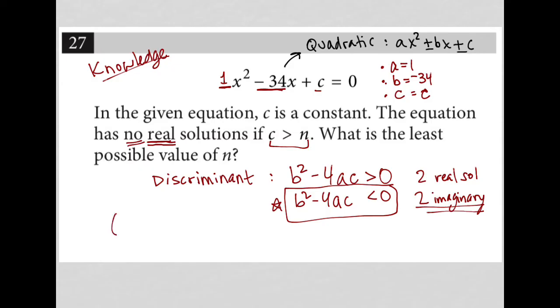So b² becomes (-34)² - 4 times a is 1 times c is just c. And I know I want this to be less than 0. So in my calculator, (-34)² is 1,156. So 1,156 - 4c is less than 0.